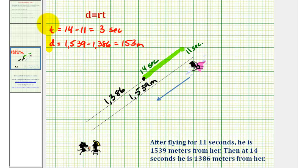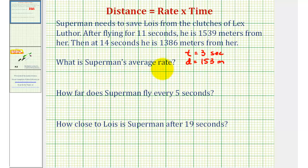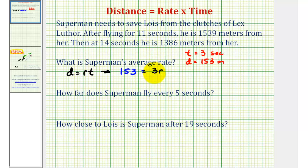Now that we have this information, we can answer the three questions. The first question is: what is Superman's rate? Using the formula distance equals rate times time, we substitute 153 for distance and three seconds for time: 153 equals r times three, or three r. Dividing both sides by three, 153 divided by three equals 51. So the rate r is 51 meters per second.